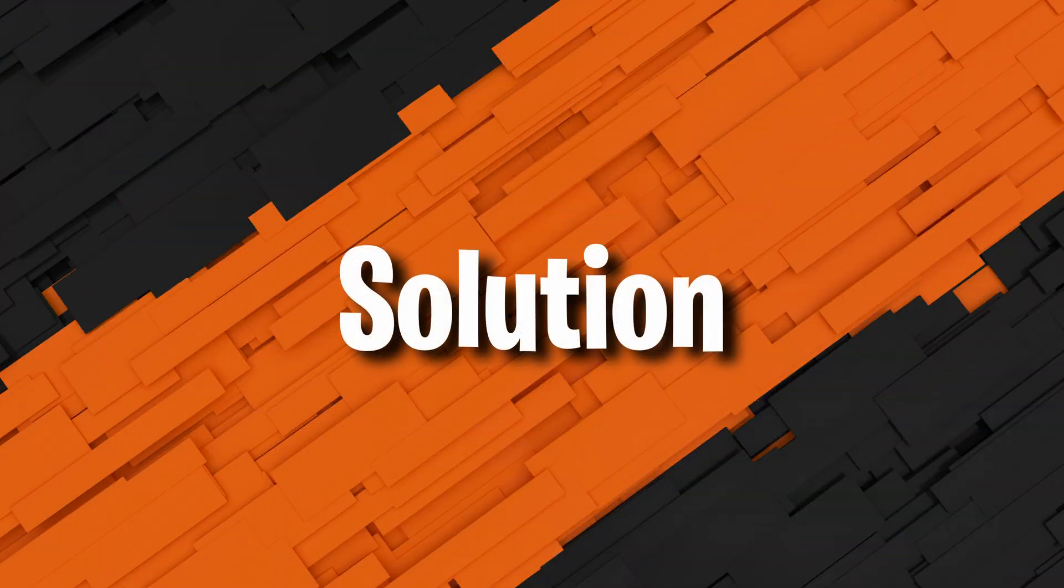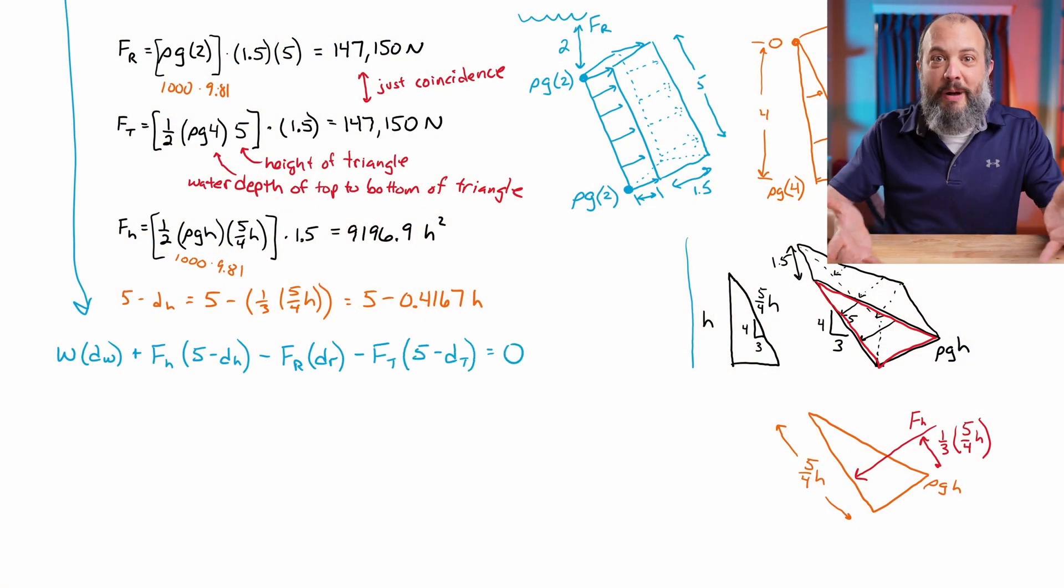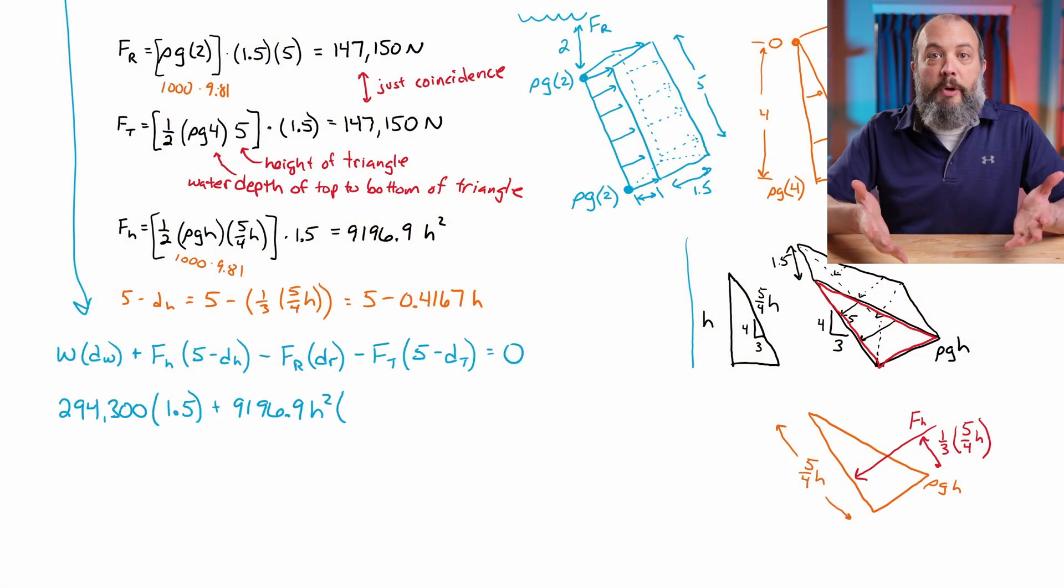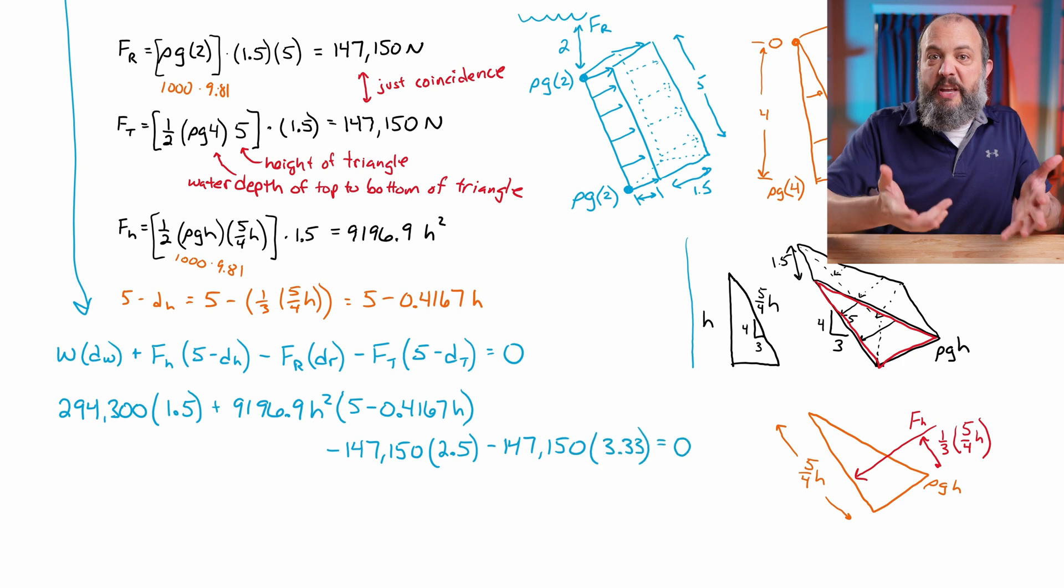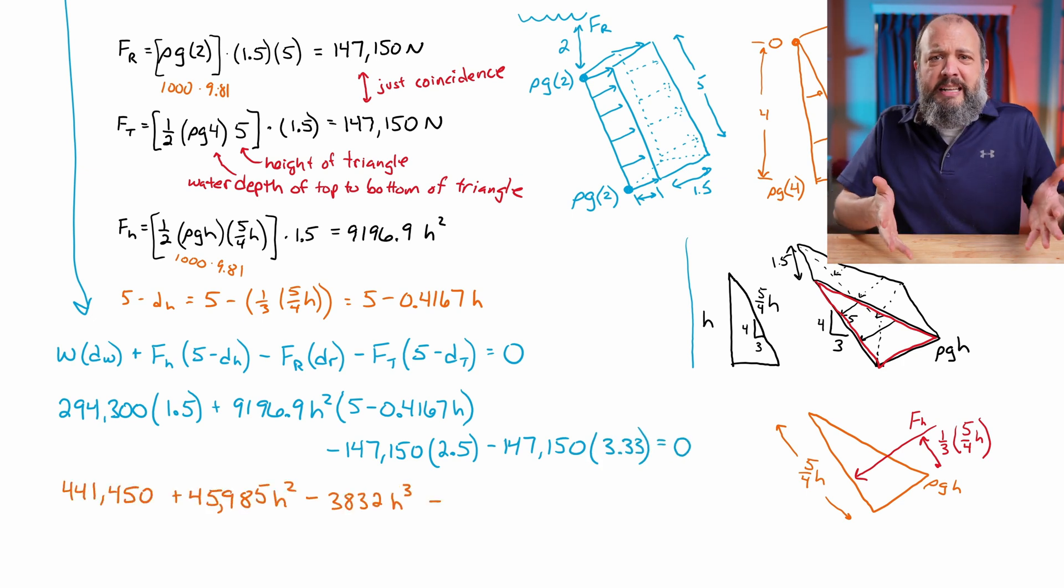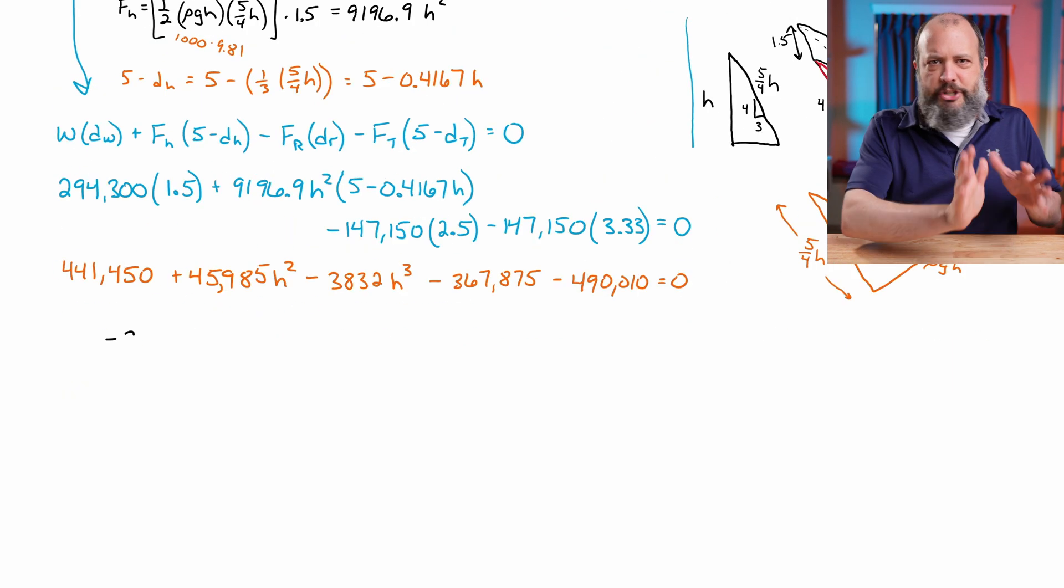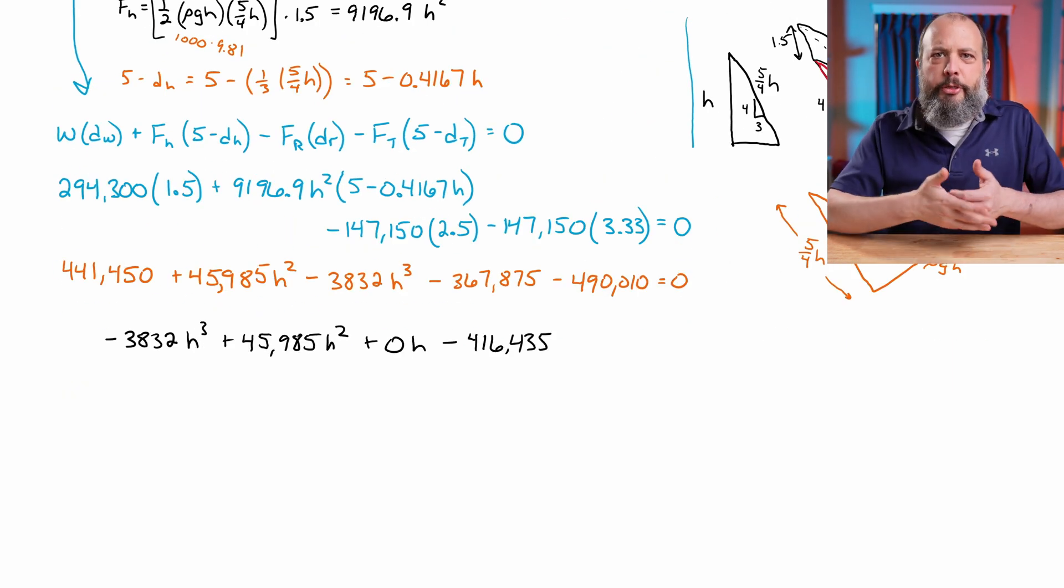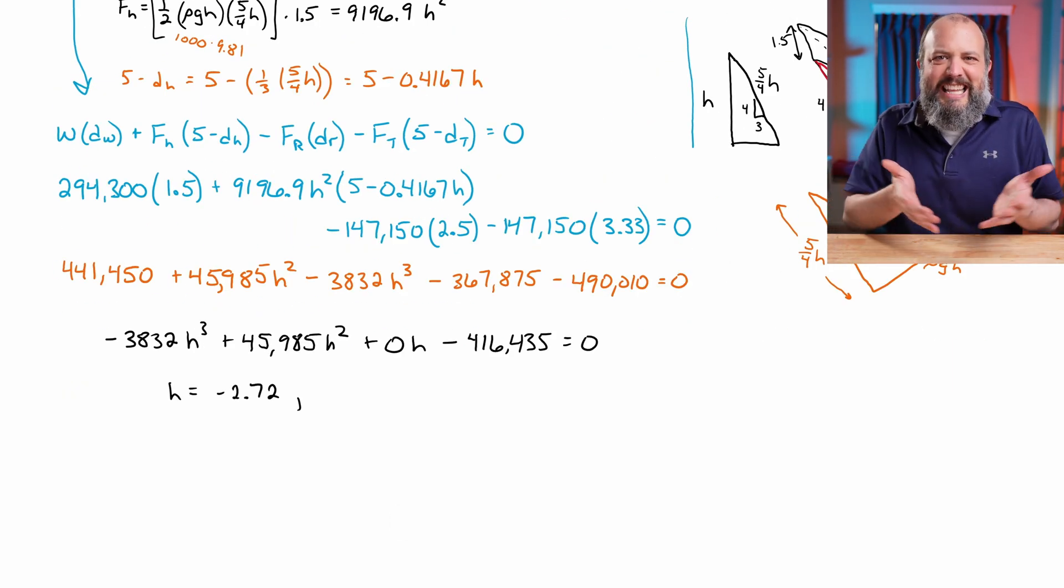And in fact, we're ready to plug in all of the quantities we have. We can now plug them back into the moment equation. Rearranging terms gives us a cubic function in h. If you plug that into a solver, you'll get three different answers. One of which is negative, which clearly makes no sense. One that is 3.6 and the other is 11.1 meters.